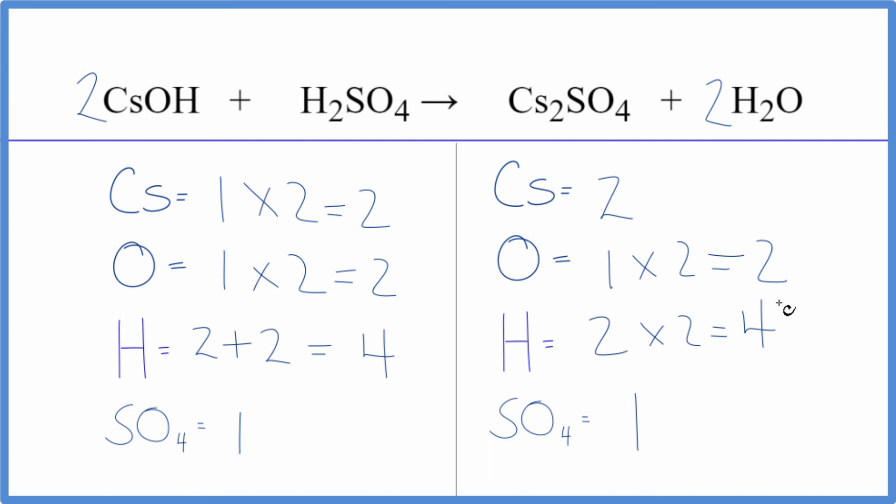This equation is balanced. So you can see if you count these polyatomic ions as just one thing, if they appear on both sides, it just makes it a lot easier to balance. You get the same answer either way. It's just a lot faster. This is Dr. B with the balanced equation for CsOH plus H2SO4. Thanks for watching.